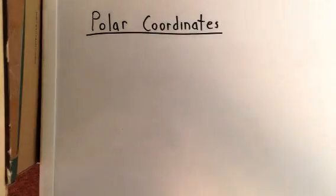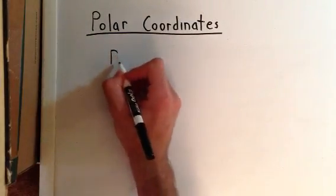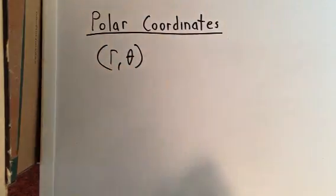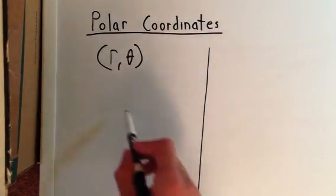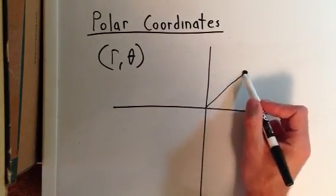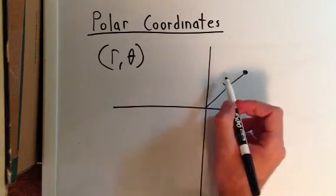Okay, so polar coordinates are written in the form of (r, θ). What that means is that when you have a point in the polar coordinate system, such as this one, r represents the distance from the origin to that point.